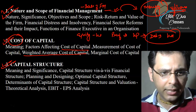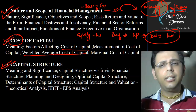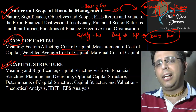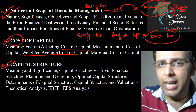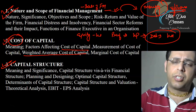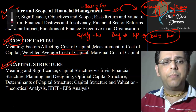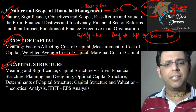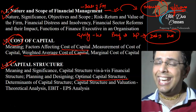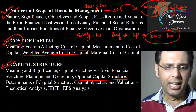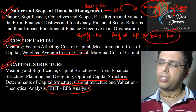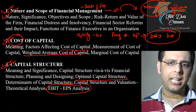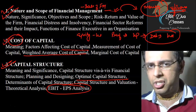Uske baad we will talk about capital structure. Humne money business mein arrange kar li toh humne finance kaise kiya - woh capital structure batayega. Capital structure kehta hai we should have an optimum capital structure - jahan pe meri market value of the firm is maximum and cost is minimum. Toh yahaan pe hume significance of capital structure aur optimum capital structure kaise maintain karein - woh hum dekhenge.